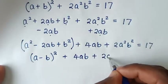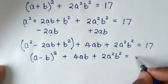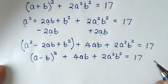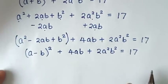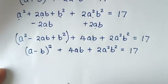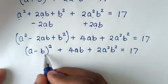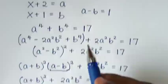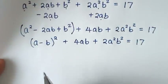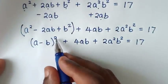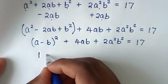Then in the next step, from here, a minus b is 1, so substituting: 1² is still 1.